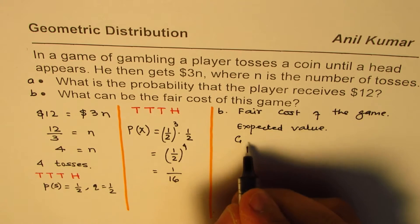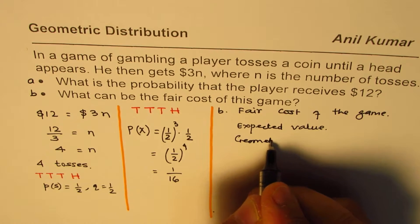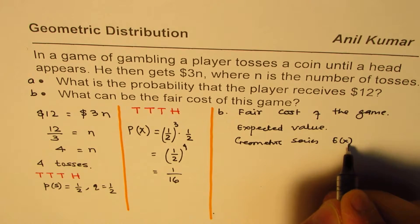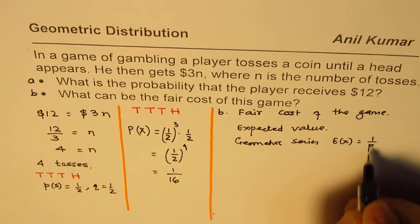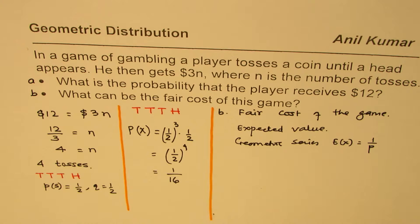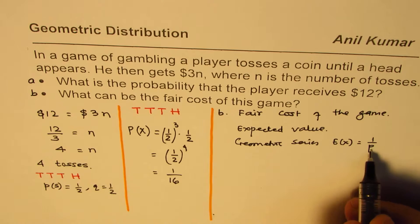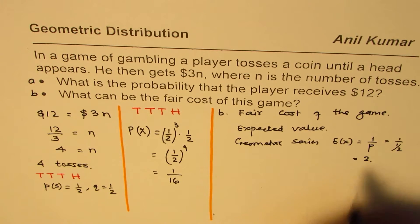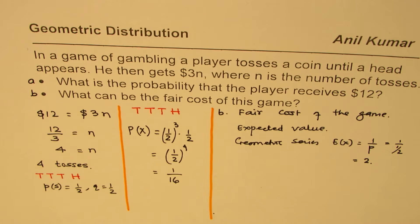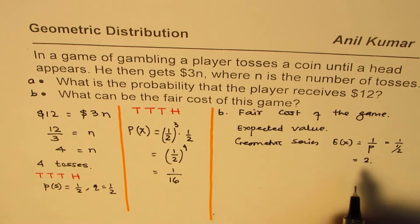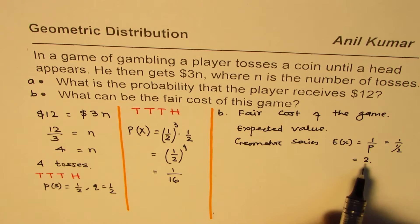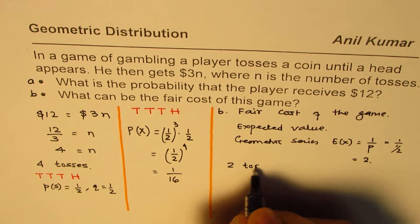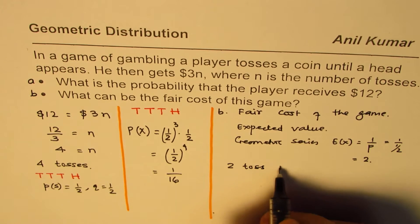In a geometric series, the expected value is 1 over p. Probability is 1/2, so it is 1 over 1/2, which is equal to 2. So basically, expected value is 2. So you need to do 2 tosses. That means 2 tosses are expected. That is the mean number.